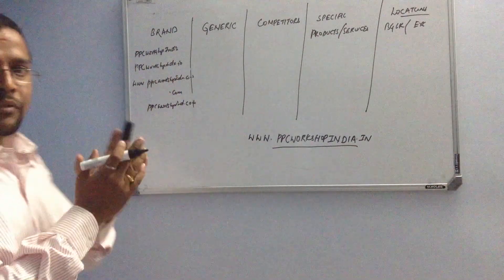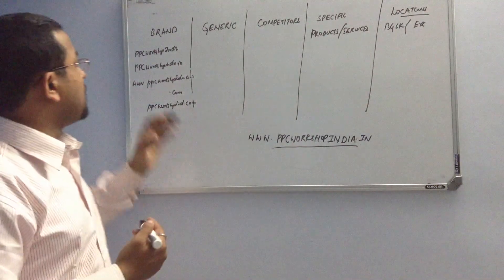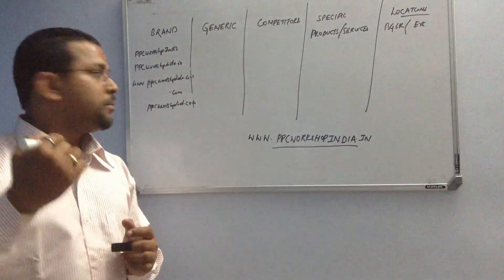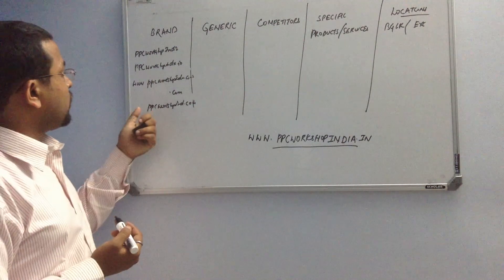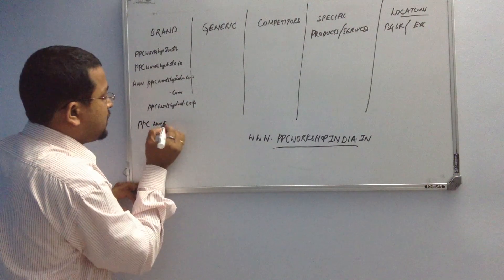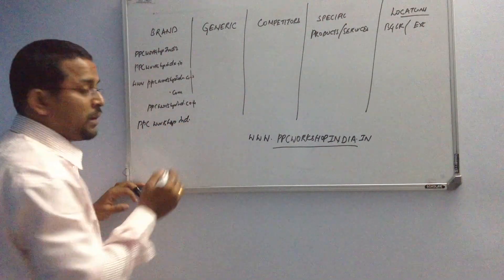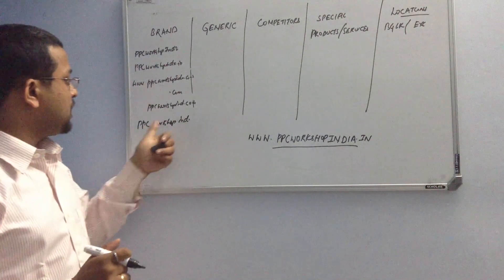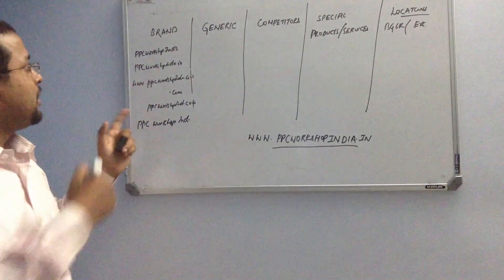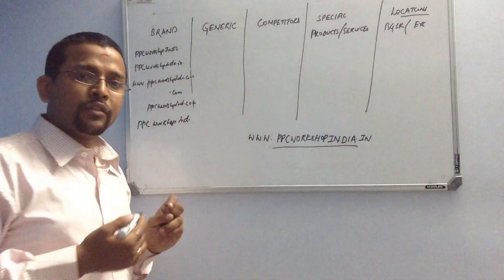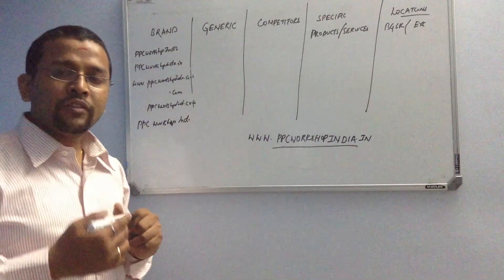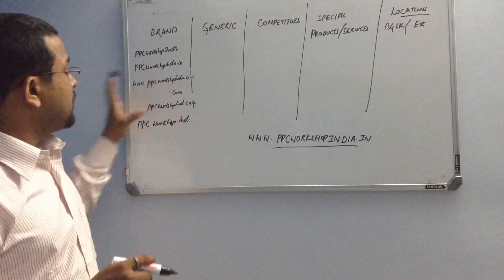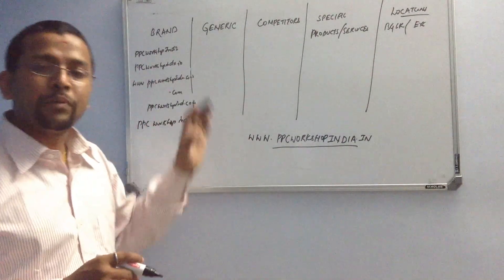So these are some set of keywords — I'm just giving you an example, and you can elaborate further based on the understanding of your domain name. You can even use keywords like http:// followed by ppcworkshopindia.in. You can literally put yourself in the user's shoes and think about what different variations they might type for your domain name. The main reason you are doing this is to make sure that your ads always pop up even when users are typing different combinations that mean the same thing.